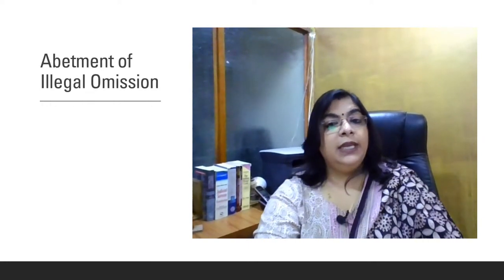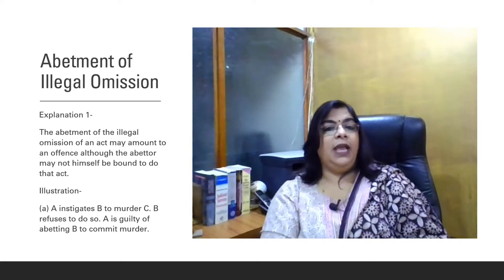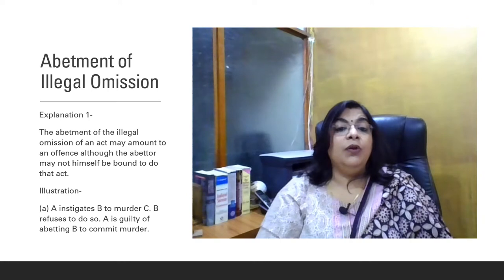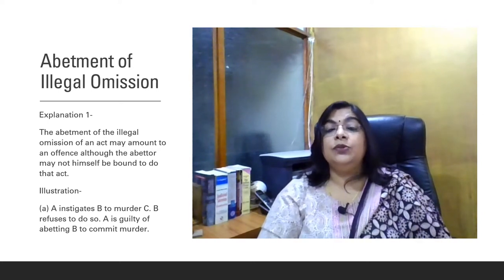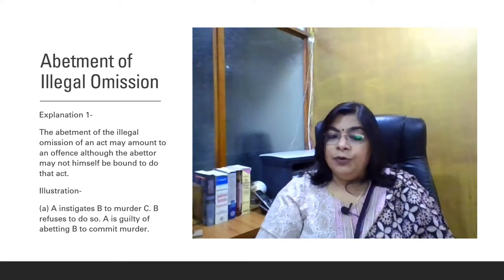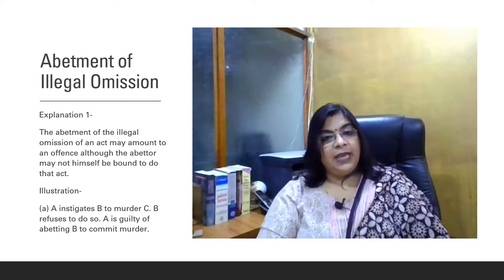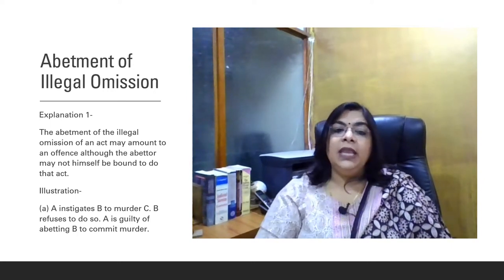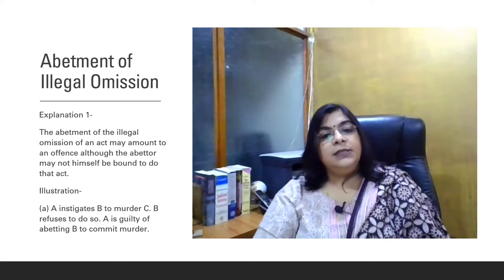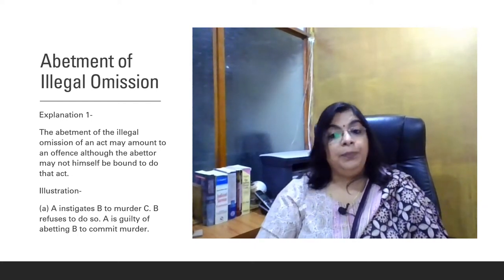There are five types of explanation under abettor. The first one is abetment of illegal omission. This explanation states that the abetment of the illegal omission of an act may amount to an offense although the abettor may not himself be bound to do that act. That means if any person is abetting another person for any sort of illegal offense, no matter whether that person is committing that act or not, the person who is abetting is committing an offense and is guilty of abetting. For example, if A is abetting B to murder C, even if B refuses to do so, A is still guilty of abetting B to commit murder.